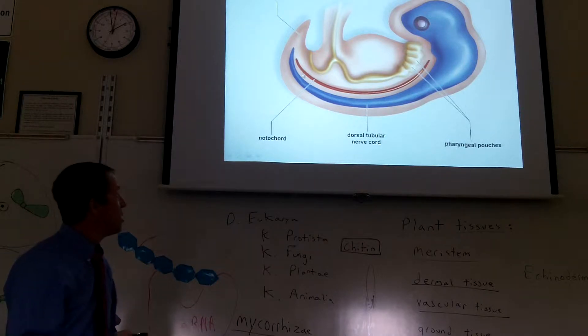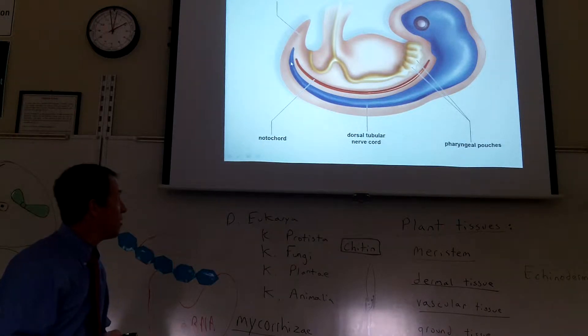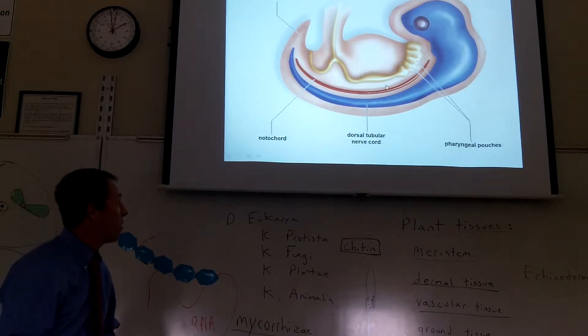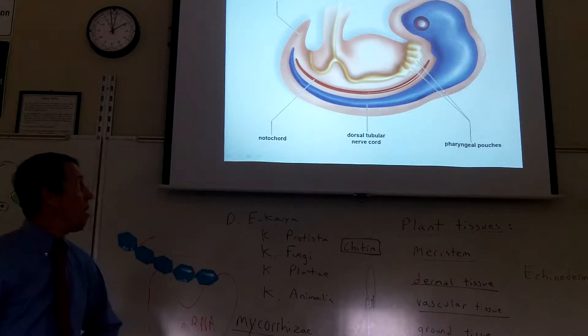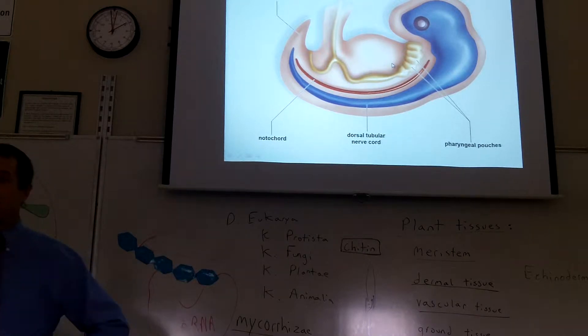So this notochord here becomes the backbone in all vertebrates. And the nerve cord here remains the nerve cord. This backbone will actually grow around the nerve cord. So the nerve cord is inside the backbone, protected by the backbone. But as an embryo, we call it a notochord. So all chordates have those characteristics at some point in their life.